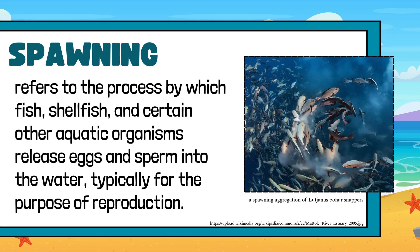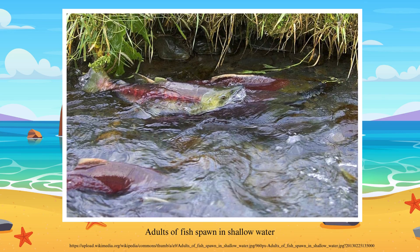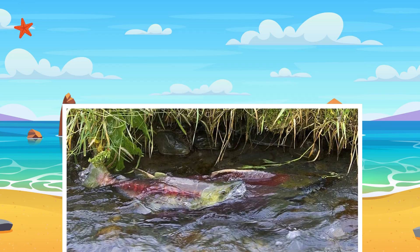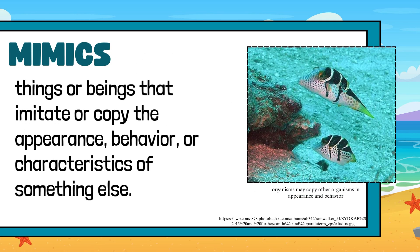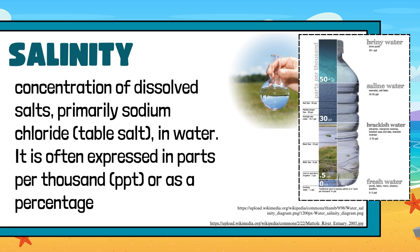Spawning: refers to the process by which fish, shellfish, and certain other aquatic organisms release eggs and sperm into the water, typically for the purpose of reproduction. Adults of fish spawn in shallow water. Mimics: things or beings that imitate or copy the appearance, behavior, or characteristics of something else. Salinity: concentration of dissolved salts, primarily sodium chloride — table salt — in water.